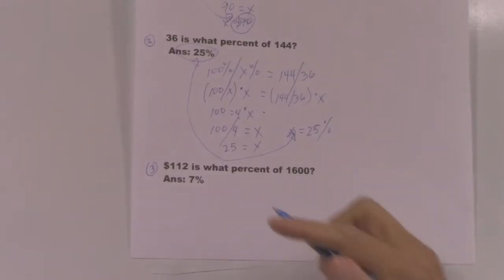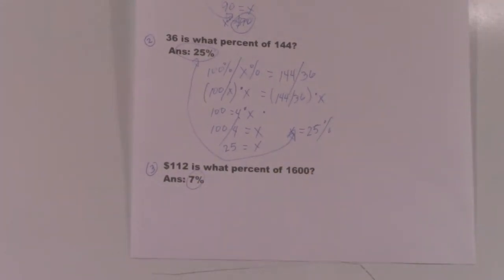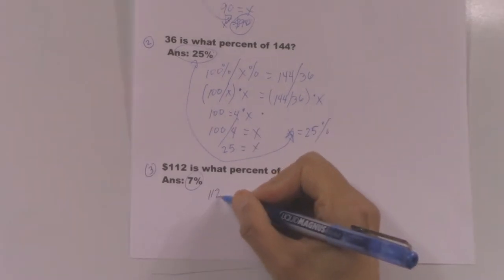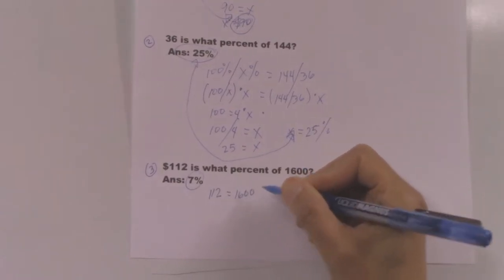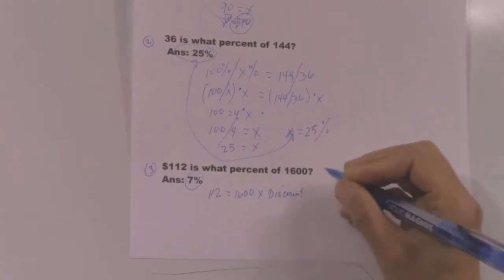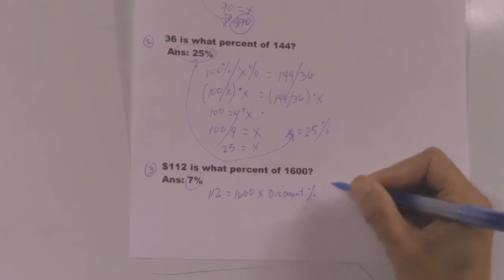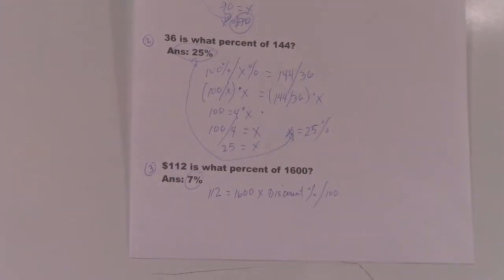$112 is what percent of 1600? The answer here is 7%. So let's see how we get the 7.